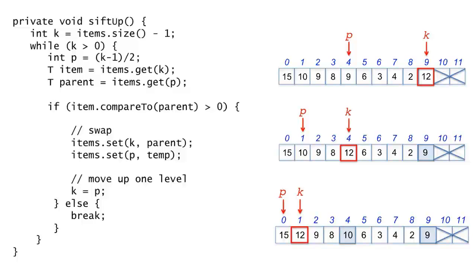This is the code for the sift-up method. The heap is stored in an arraylist called items. Initially, k is set to the index of the last entry in the arraylist, which is the one to be sifted up. The while loop spins as long as k is greater than 0, which is to say the sift-up item has not reached the top of the heap.